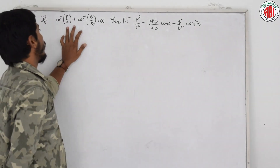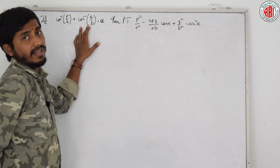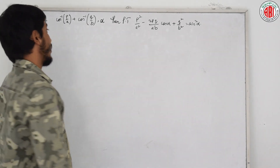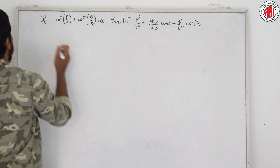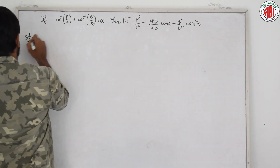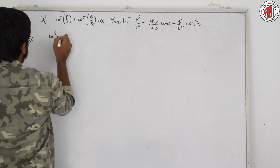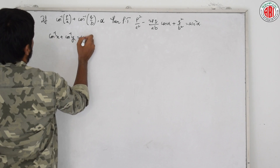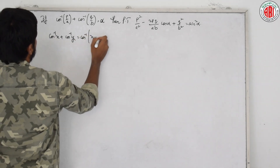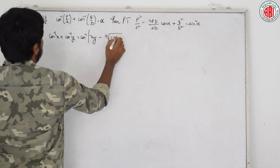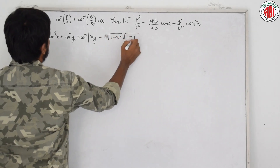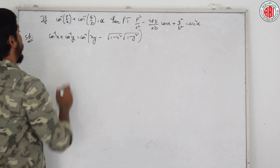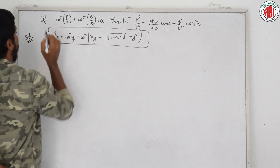What is the formula we know? Cos inverse x plus cos inverse y is equal to cos inverse of xy minus under root of 1 minus x square into under root of 1 minus y square. Shall we use the formula? Let us do that. Now let us simplify using this formula.